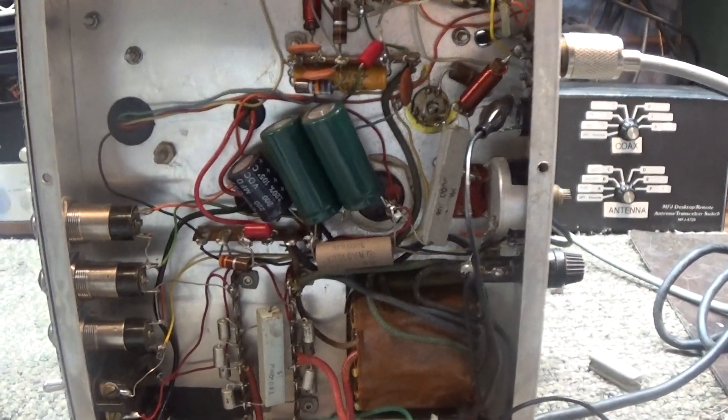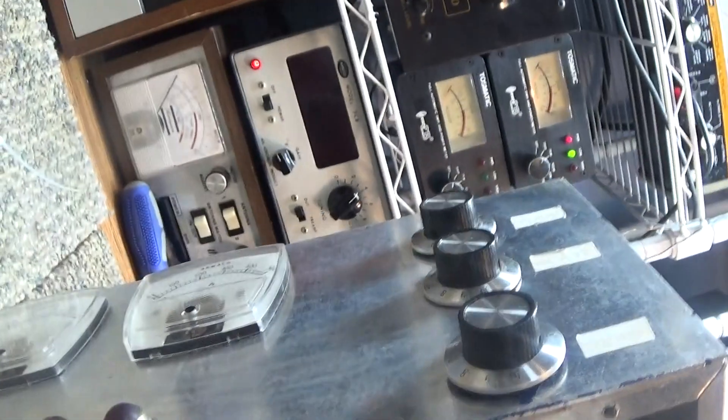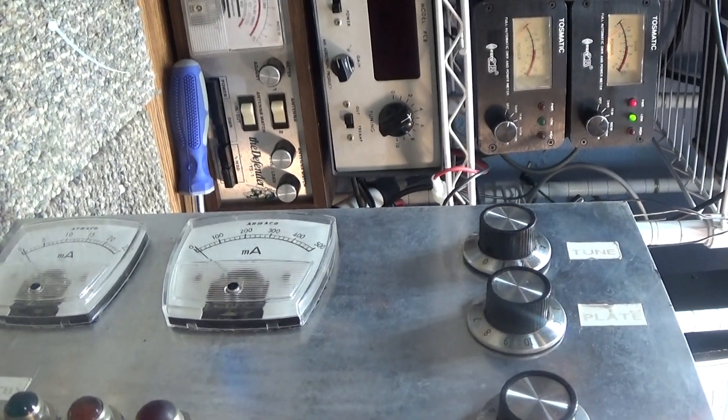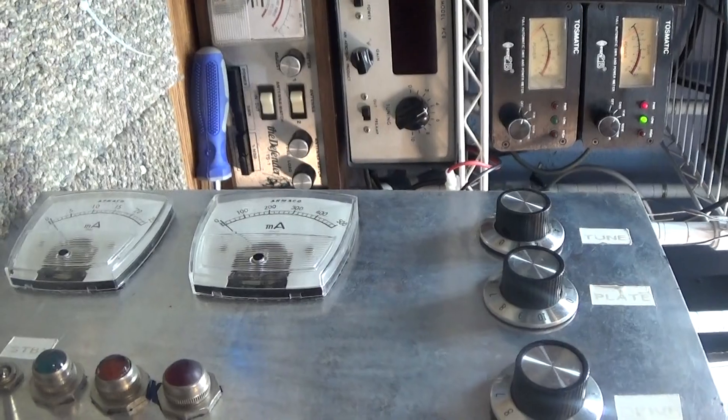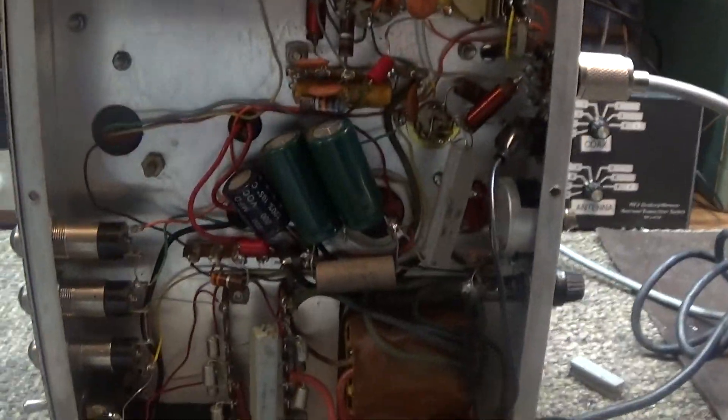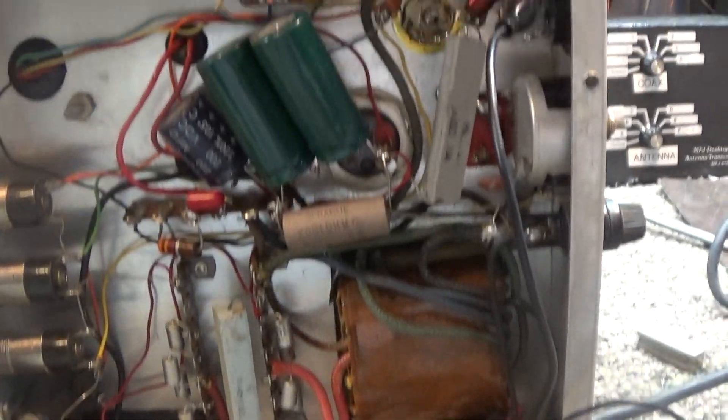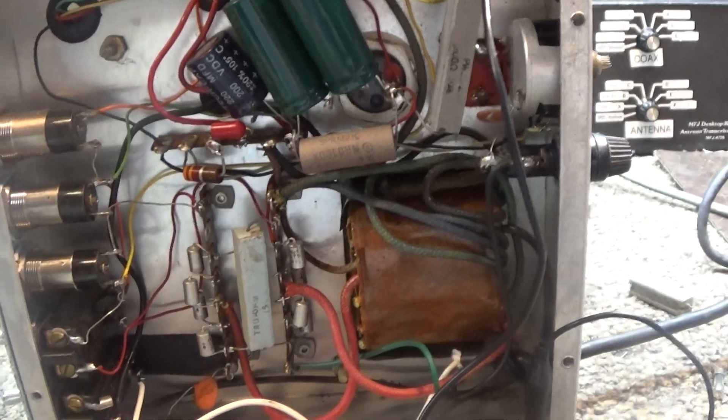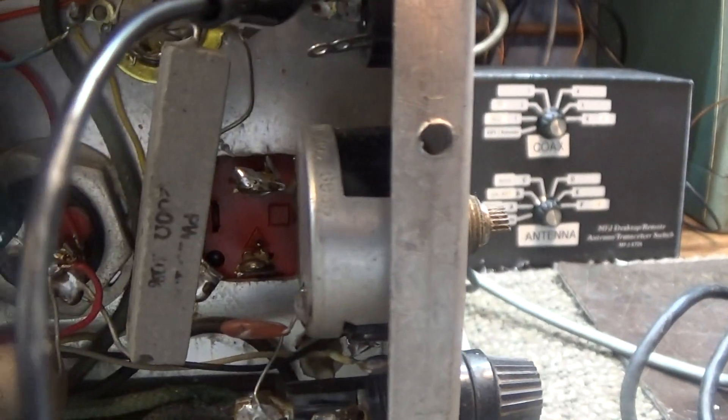All right, gonna do a quick video of a junky homemade two tube 6146A amplifier, a little 50 watt amplifier. I don't even remember where I got it from, but it was in the junk box and I'm trying to get some projects out the way. So I recapped it - it originally had some canned caps there, you can see them disconnected, and I'm putting in some fresh normal electrolytics in there.